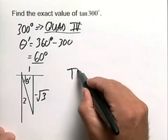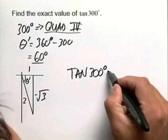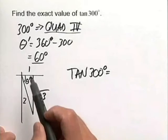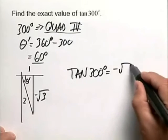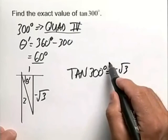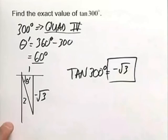So the tangent of 300 degrees will then be equal to the following: the opposite over adjacent, negative square root of 3 in this case over 1, which is simply negative square root of 3. So that is the exact value of the tangent of 300 degrees.